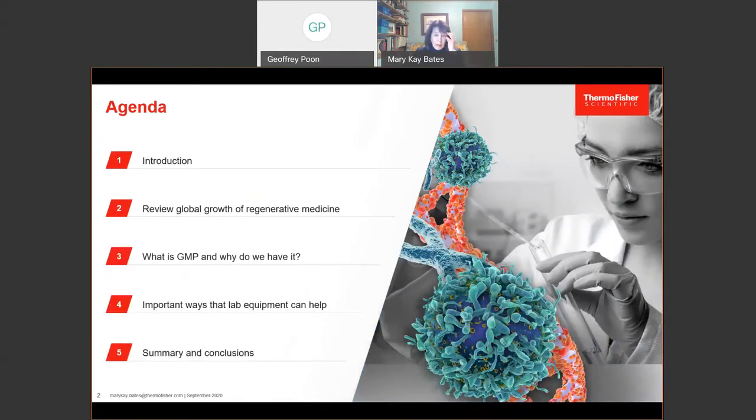The agenda is, I'll start with an introduction. I always like to start with defining terms so that we are all starting from the same understanding. I'll begin with an overview of what is regenerative medicine, and then review the growth of regenerative medicine globally. Then I'll turn to what is GMP and why do we have it. This is really the main part of the talk. Then we can turn to laboratory equipment required for GMP. You may be surprised that some of the lab equipment you already know and love can help you on your road to compliance.